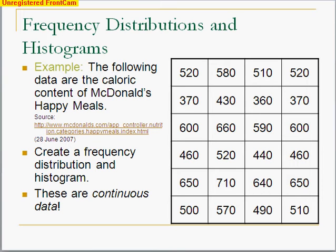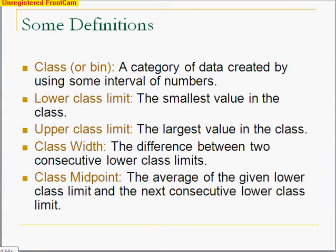So when we have a continuous variable, how we make the distributions and how we make the histograms is a little bit different. We have what we call bins or classes. It's probably better if I show you first, and then we'll come back and talk about these words here.